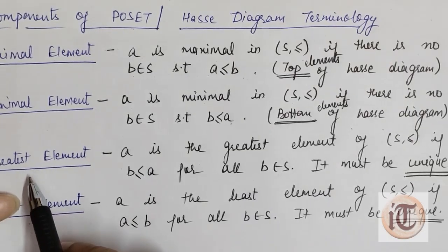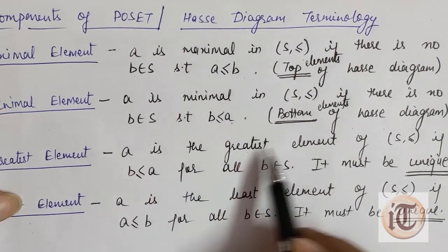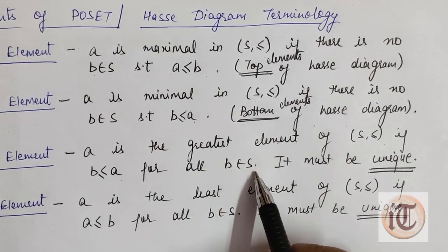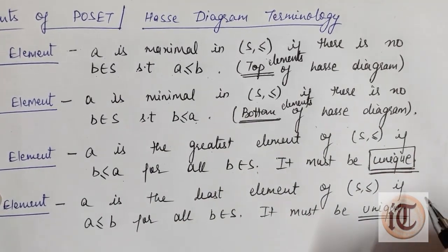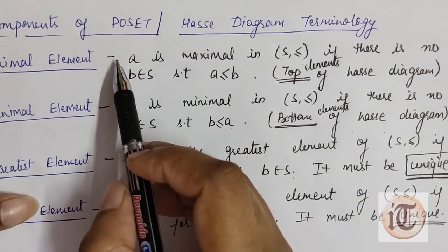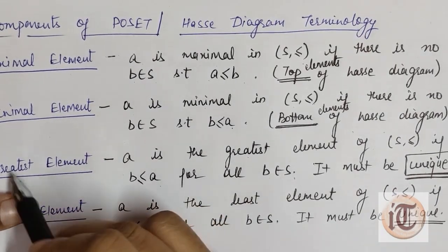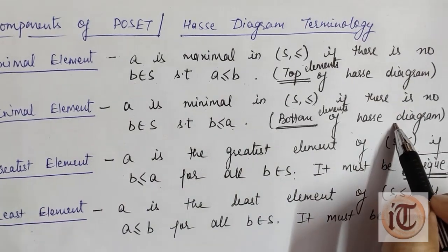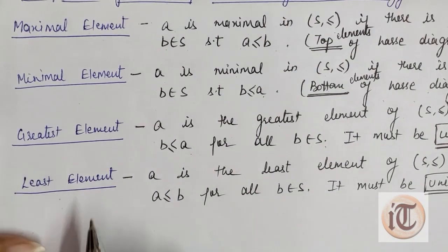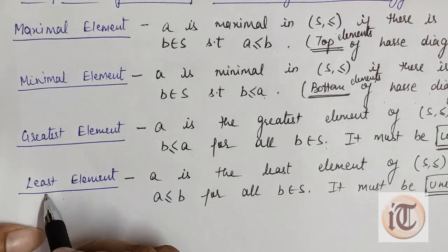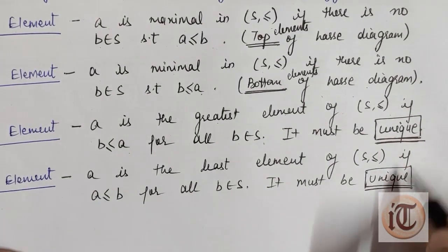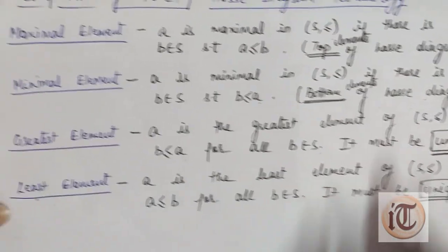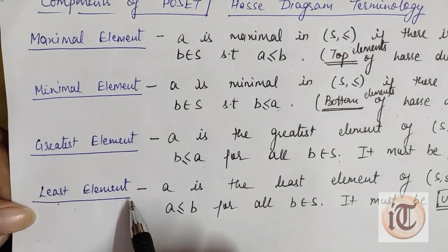After finding maximal and minimal, we discuss the greatest element. An element a is the greatest element of poset (S, ≤) if b ≤ a for all elements b belonging to S, but importantly it must be unique. If we have more than one maximal element then there is no unique element, therefore we do not have any greatest element. Similarly, if we have more than one minimal element then there is no unique element and therefore no least element. So for greatest and least elements, the maximal and minimal element must each be a single unique element.